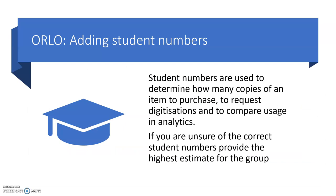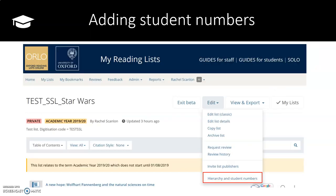Student numbers can be very useful when purchasing items for reading lists. They are also required when we are requesting digitizations, so it is very good to add them to a list if you know them. They can be added by editing the list using the edit button at the very top. This will be demonstrated momentarily.